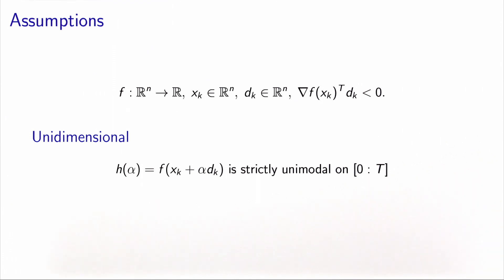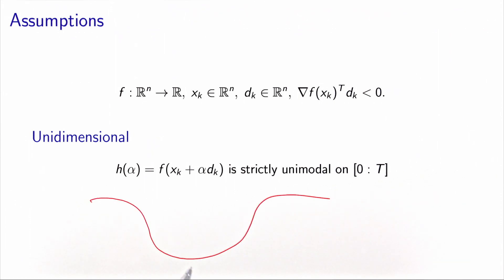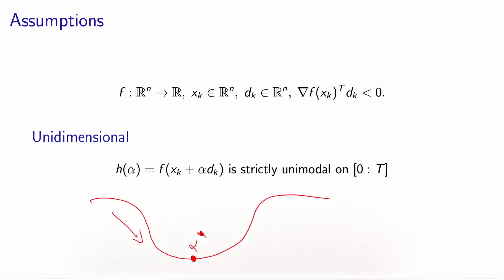So what does strictly unimodal mean? It means that the function has a unique global minimum, that I call alpha star, in the interval. On the left, the function is decreasing, and on the right, the function is increasing. This is the definition of strictly unimodal. We will exploit this property in order to identify alpha star, or an approximation of it.